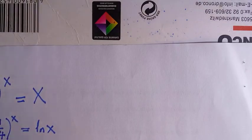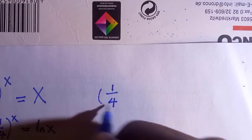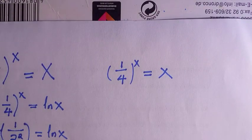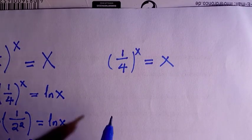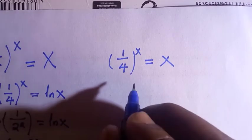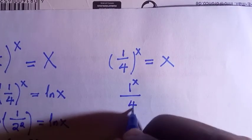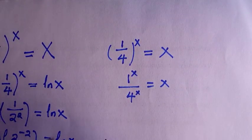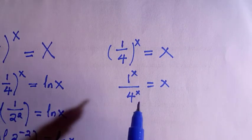So let's see another method of dealing with this — the second method for these exponentials. You might have another method, so drop it in the comments. For the second method, applying the law of indices by separating the base and power gives 1 to the power x divided by 4 to the power x equals x. Since 1 raised to any power is 1, it becomes 1.